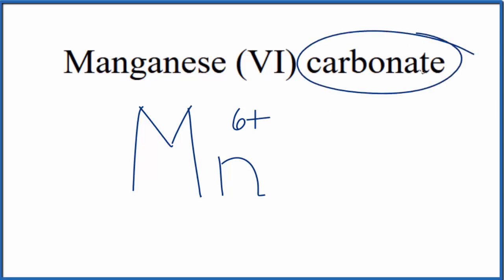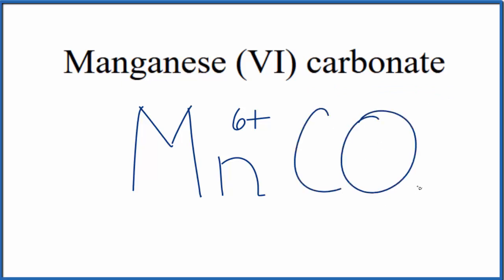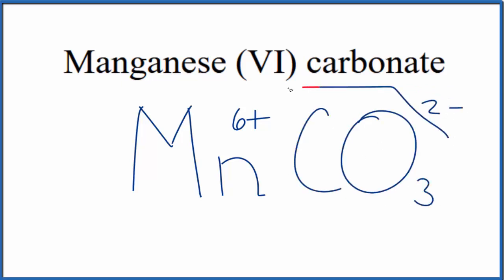Carbonate — you won't find that on the periodic table. The '-ate' ending tells us we have a polyatomic ion. You either memorize that the carbonate ion is CO₃²⁻, or if you're allowed, you look it up on a table of polyatomic ions. Carbonate is a pretty common one — good one to remember. It's CO₃²⁻, and that 2− charge is on the whole carbonate ion.